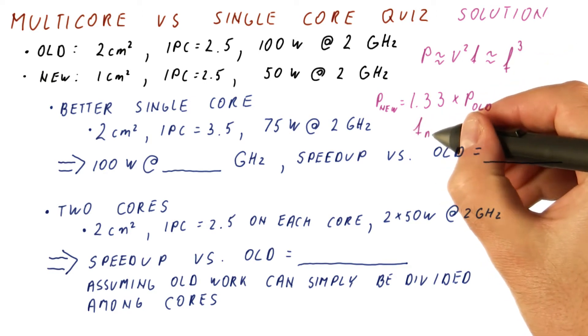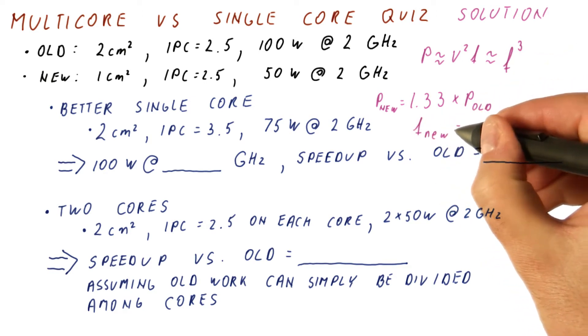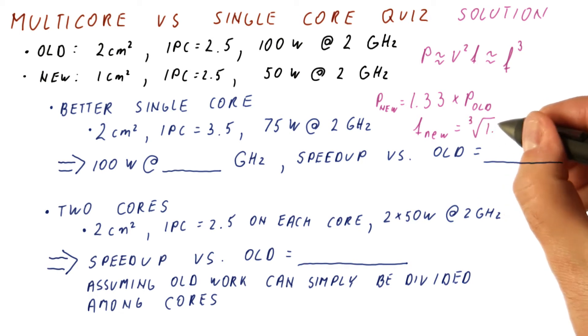That means that the frequency that we can operate on is the cubic root of 1.33 times the old frequency, and this is equal to 1.1.